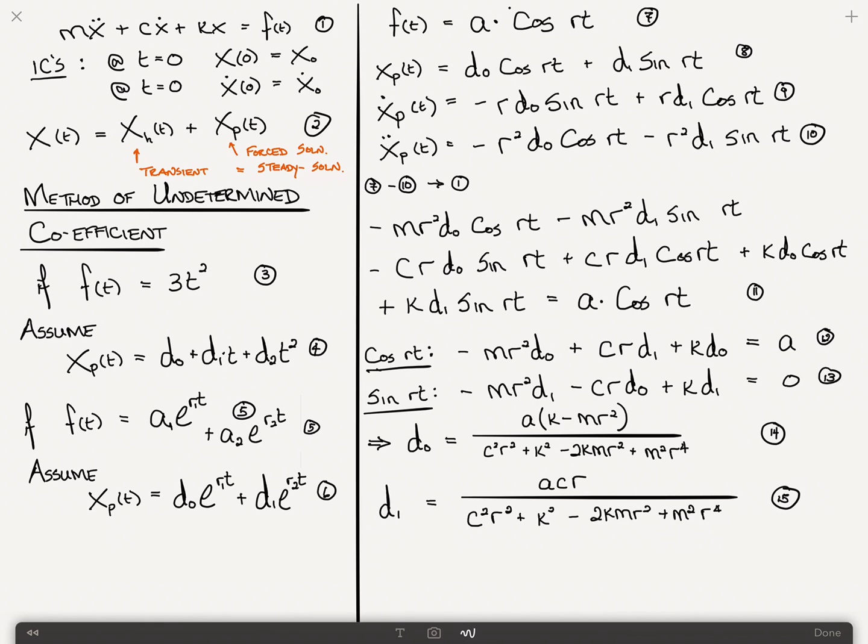Before finishing off, there's just one other thing I'd like to point out. d1 is a function of c, which you'll find out in a different video is the damping constant. c is the amount of damping in the system. If there's no damping, in other words, if this term in the differential equation is zero, then d1 is equal to zero.